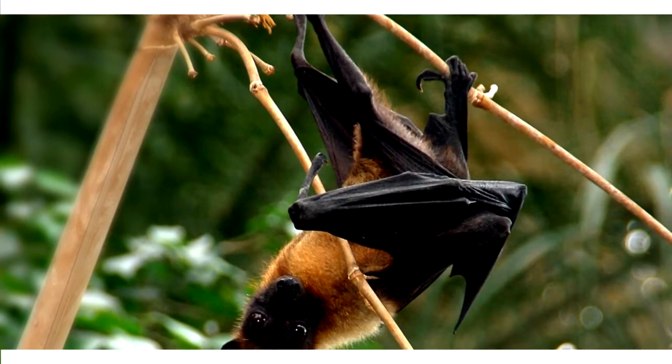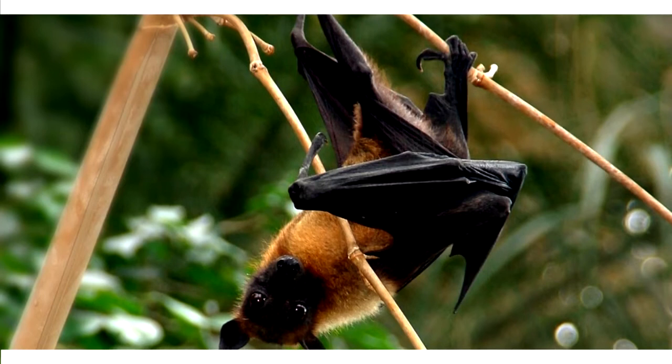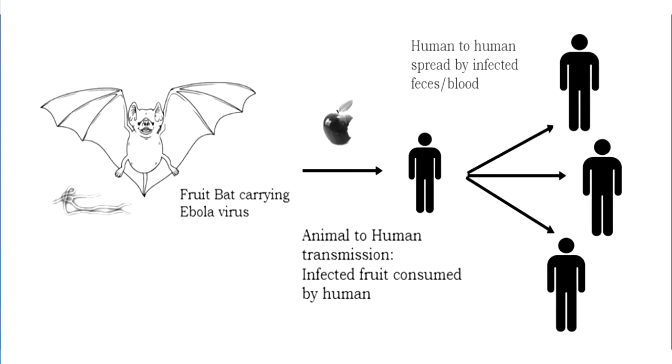This virus has probably — though we're not sure — been spread by fruit bats. The bats carry this particular virus. The bats may have contaminated food that was then eaten by an individual, who developed Ebola and then spread it to other people through their bodily secretions. But it was the bat that originally harbored this virus, gave it to people, and it was through person-to-person spread that it has taken off.